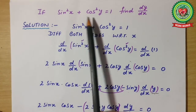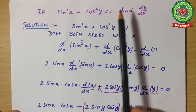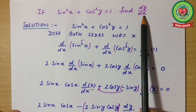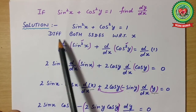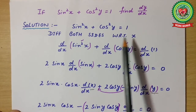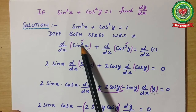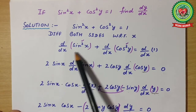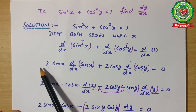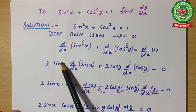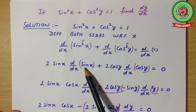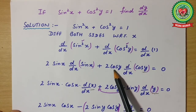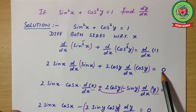Taking one more example with trigonometric ratios: if sin²x + cos²y = 1, find dy/dx. Again differentiate both sides with respect to x. Since there is a degree (power), we solve the degree first, then the trigonometric ratio, then the angle. For sin²x: 2 sin x · d/dx(sin x). For cos²y: 2 cos y · d/dx(cos y). The differentiation of the constant 1 is 0.